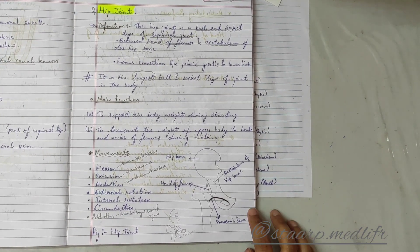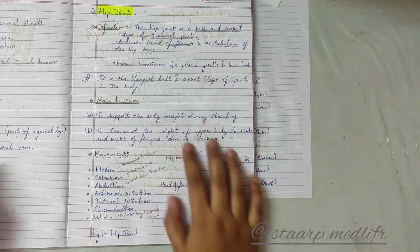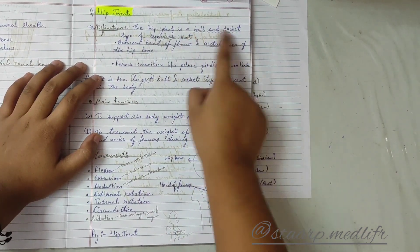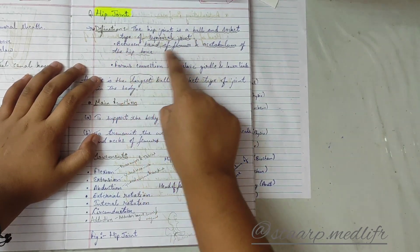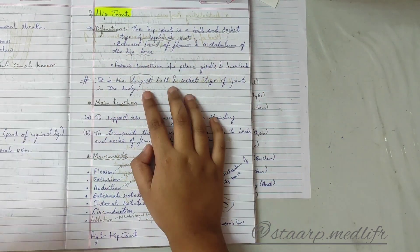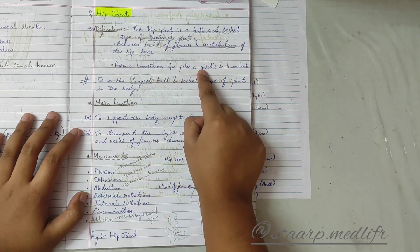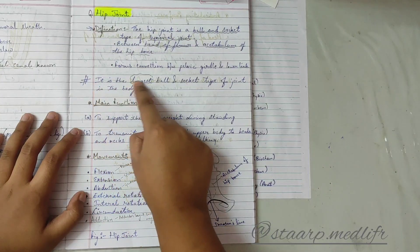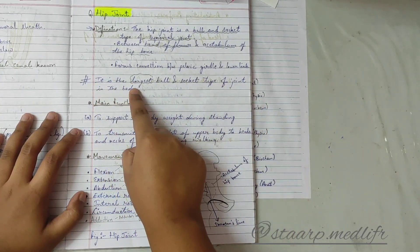Today's topic is the hip joint. The hip joint is a ball and socket type of synovial joint between the head of the femur and the acetabulum of the hip bone. It forms the connection between the pelvic girdle and the lower limb, and it is the largest ball and socket type of joint in the body.